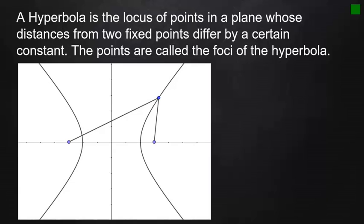In this illustration, let us identify our foci and the points on our hyperbola. Let this point be F₁, and this other point be F₂. This is the center of our hyperbola. From the center to each focus, the distance is c. So the coordinates of F₁ are (−c, 0), while the coordinates of F₂ are (c, 0), and the distance from F₁ to F₂ is 2c.